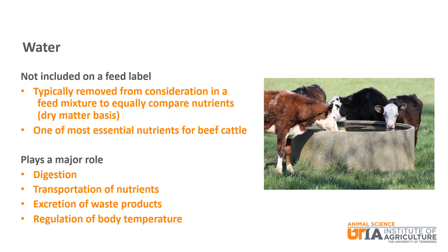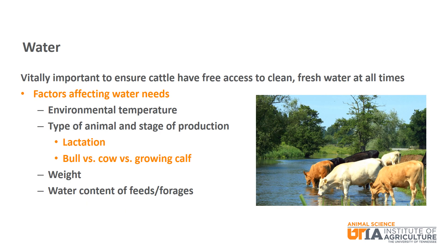One last important nutrient that is not included on a feed label is water. In fact, water is typically removed from consideration in a feed mixture so that feeds and nutrients can be considered on an equal basis — we talked about feeds on a dry matter basis in an earlier episode. However, water is one of the most essential nutrients for beef cattle. Water plays a major role in digestion, transport of nutrients within the body, excretion of waste products, and regulation of body temperature. It is vitally important to ensure that all cattle have free access to clean, fresh water at all times.